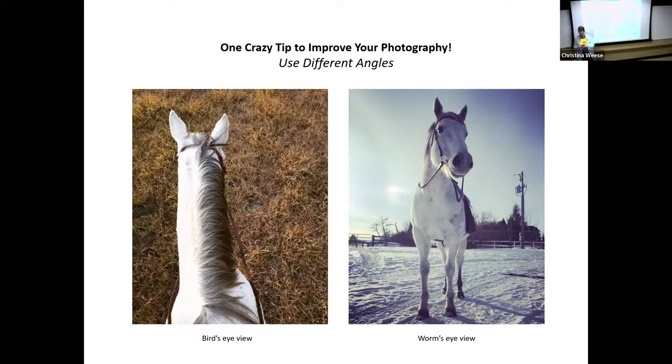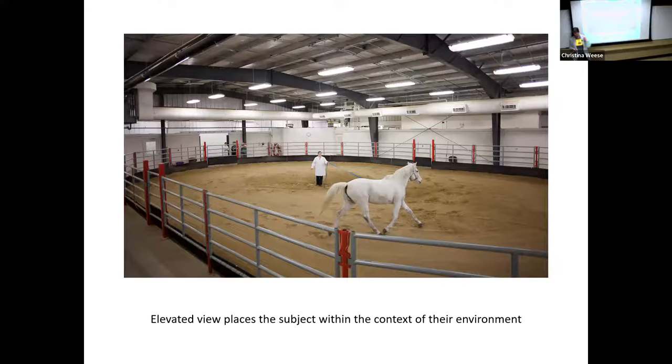Worm's eye view is from below, looking up, and you can separate the subject from their surroundings by doing this. This works great if you have surroundings that aren't so pretty and you want to just shoot against some trees or the sky. Here's another example of how being up a little bit higher can put the subjects within their environment by showing it around them a little bit better.